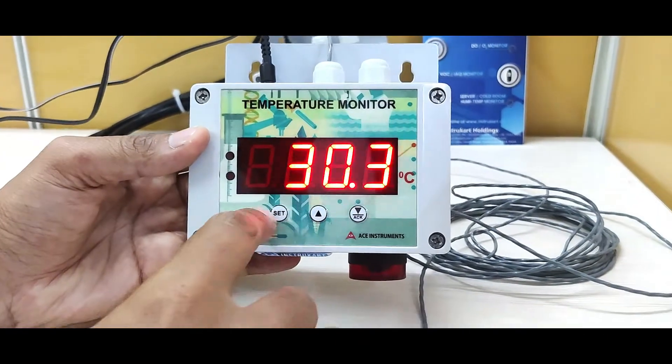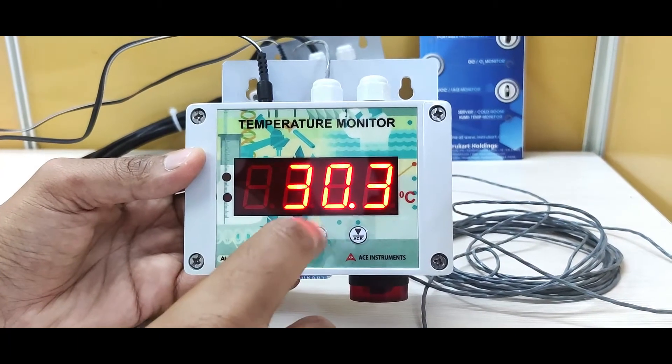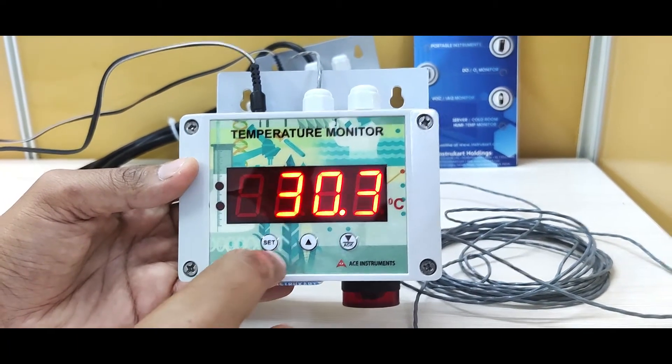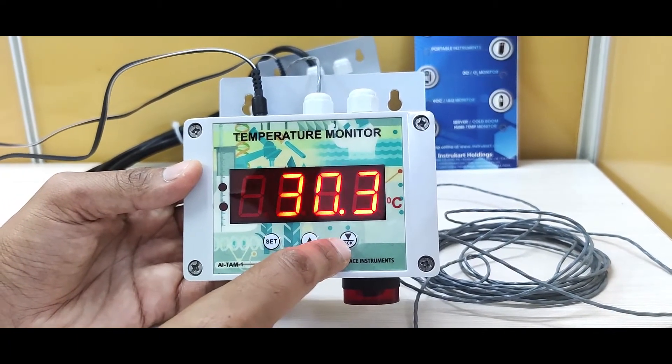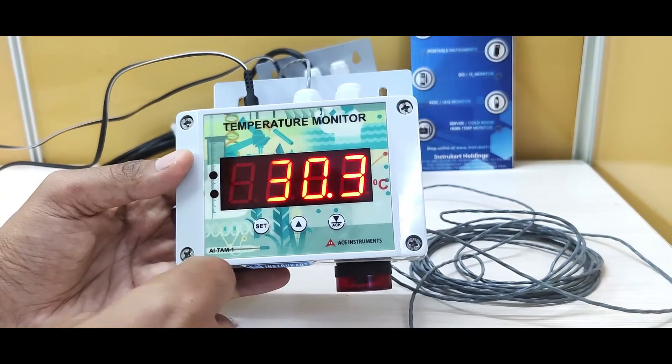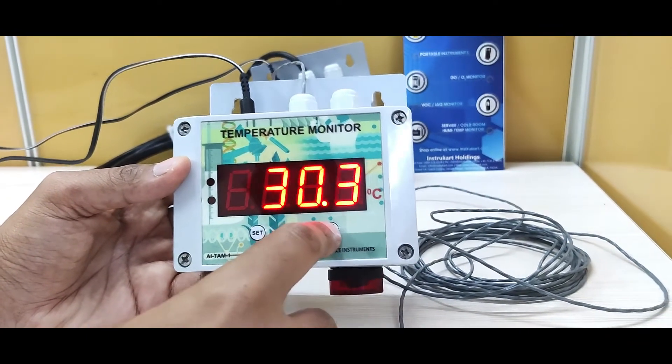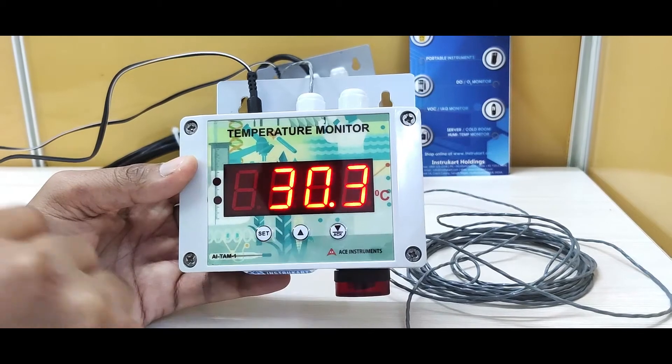On the front you can see three keys to set the low limit and high limit for temperature, and an acknowledgement button. If the alarm is triggered and you want to manually acknowledge and stop it, you can use this button.